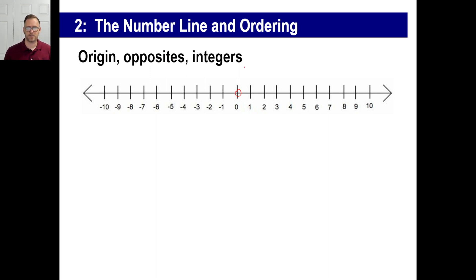Just a couple of things you need to know about a number line. This is the origin — zero is the origin. Opposites are simply two numbers exactly the same distance on the other side of the origin. If you have a seven, the opposite of seven is negative seven. If someone says negative five, the opposite is positive five. If you add two opposites together, the answer is zero, because they're exactly the same distance from zero.